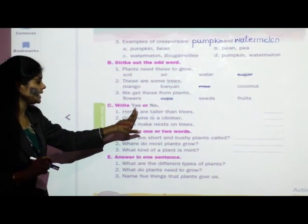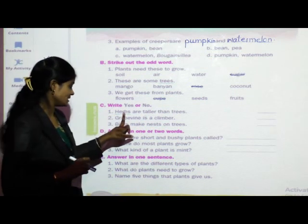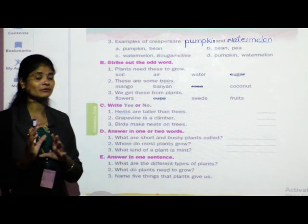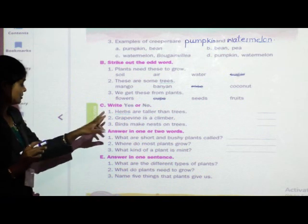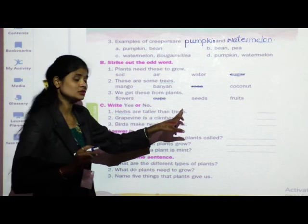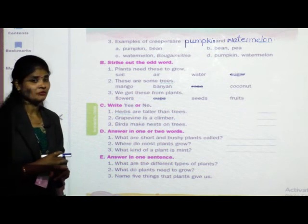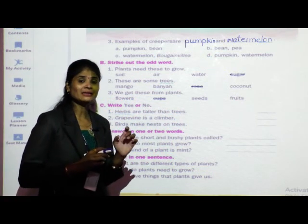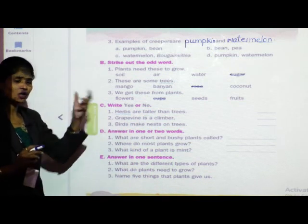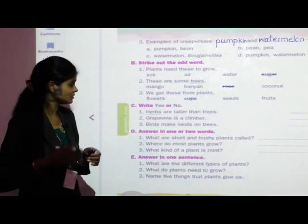Question C: write yes or no. Three questions are given. If the sentence is correct write yes; if not correct write no. First: herbs are taller than trees. Herbs are plants which have a weak and green stem. They are shorter than trees, not taller. So write: N-O — no. Herbs are not taller than trees.